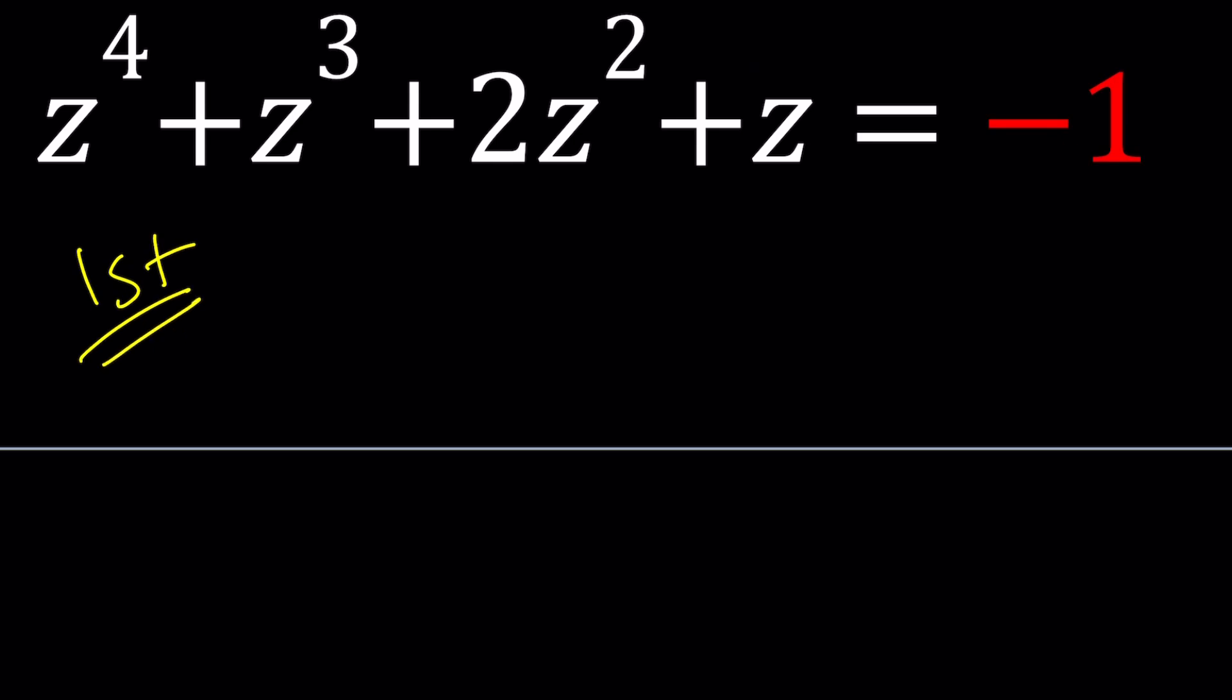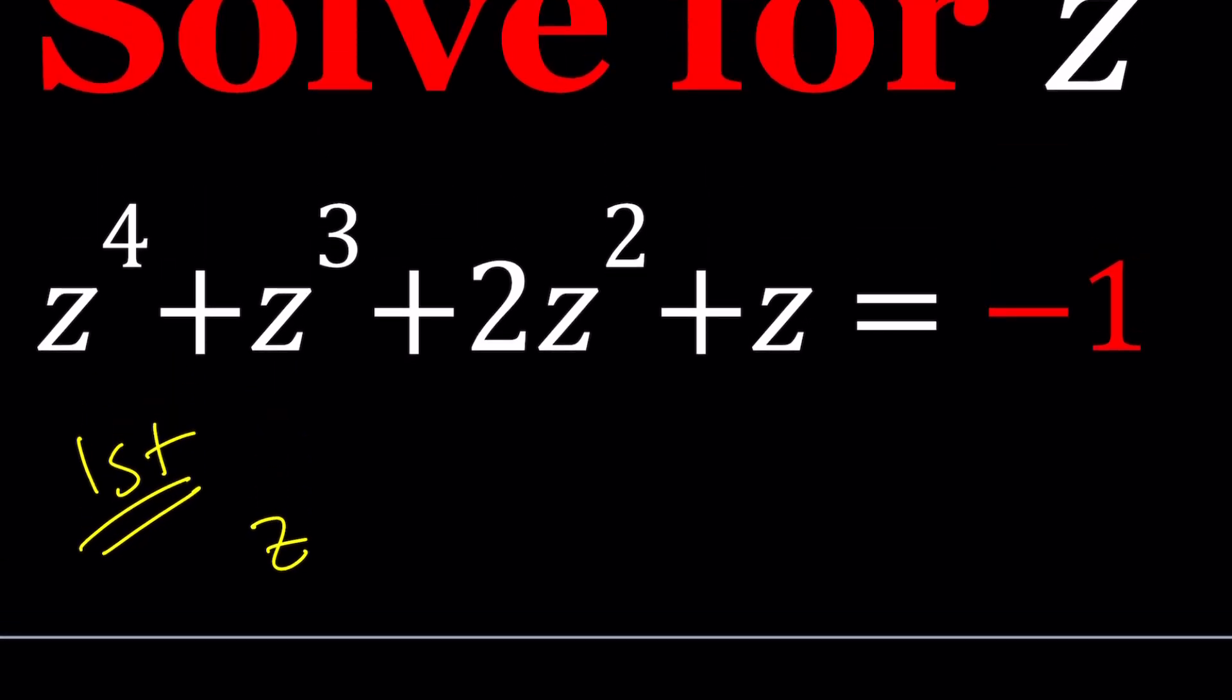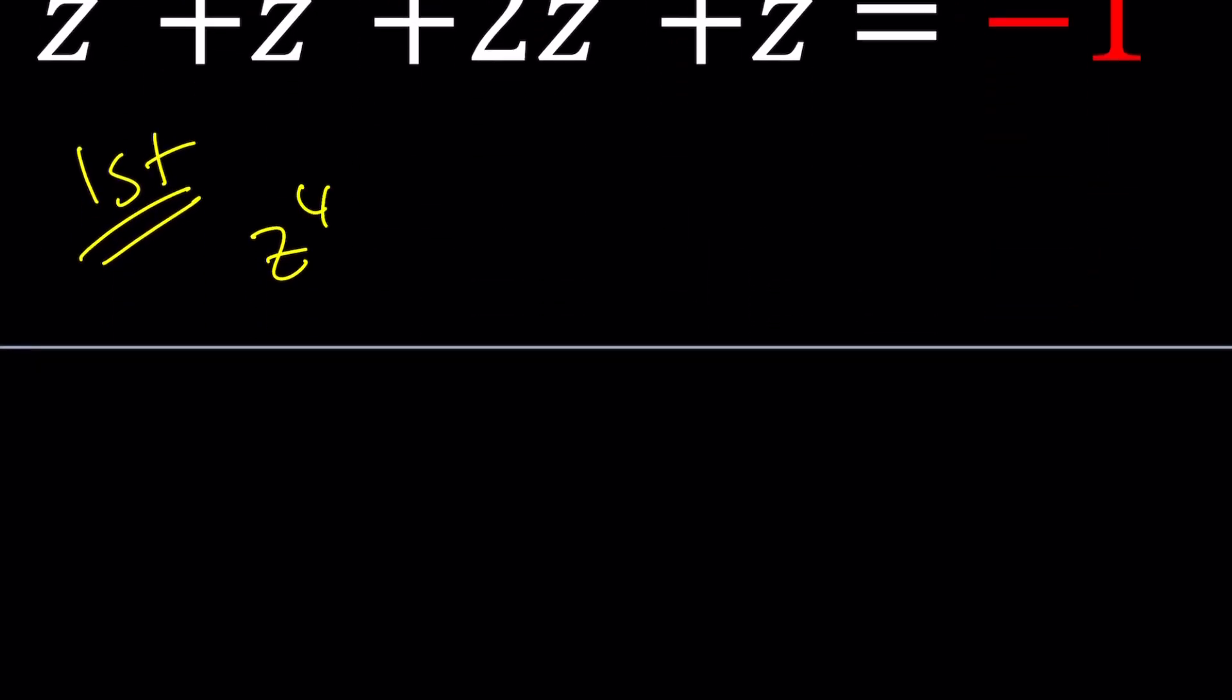Now, one thing I want you to notice about this equation is that it's a symmetric polynomial. Wait a minute. How do you know that, right? Let's put everything on the same side first. So I'm adding one to both sides, and I get a nice polynomial. If you look at this polynomial, there is a center, and 2z^2 is in the middle.